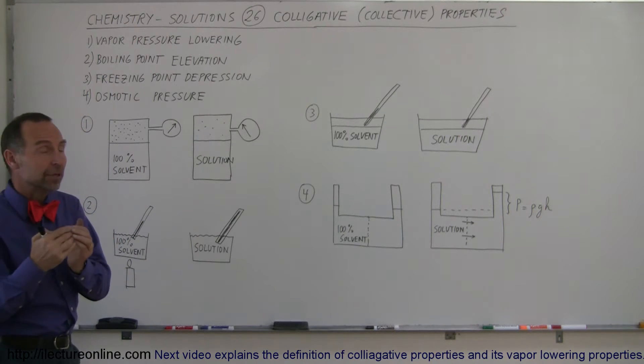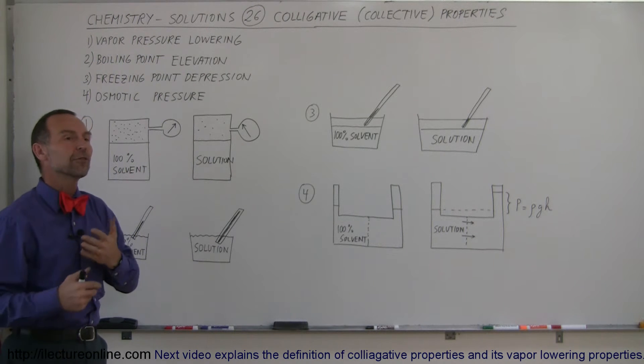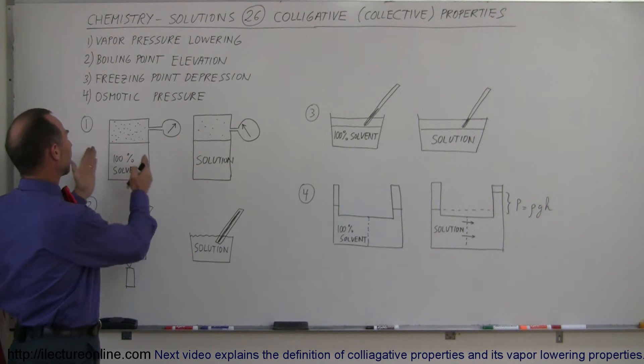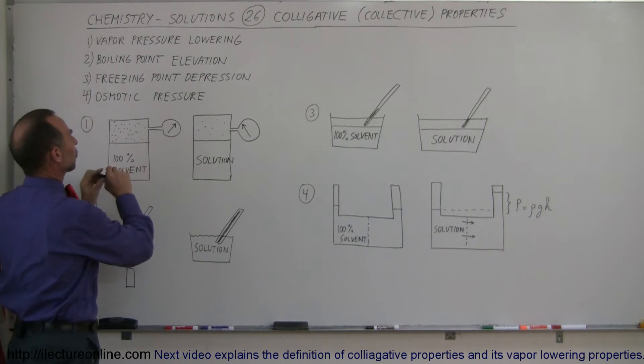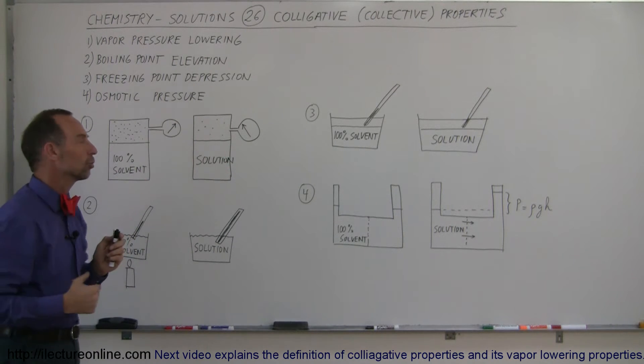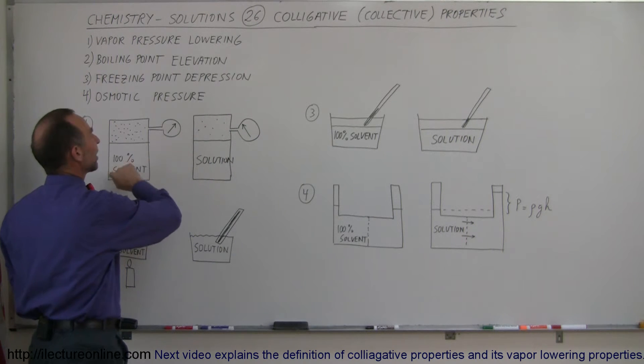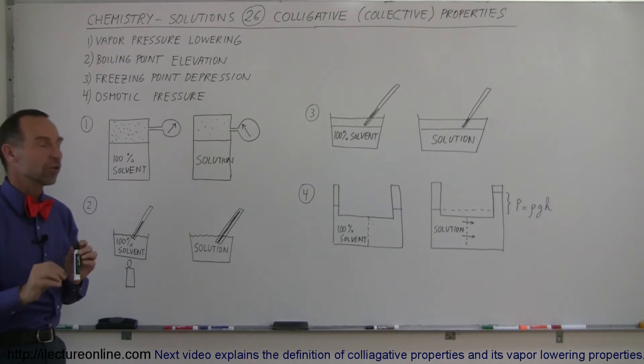The major properties that we're going to look at, the four, are one, the vapor pressure lowering of solvents. For example, a solvent by itself will have a certain vapor pressure, and then we add a solute to it, so now we have a mixture, a solution as we call it, an aqueous solution. The vapor pressure can actually decrease because of that, because the effect that the solute has on the solvent.